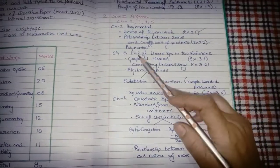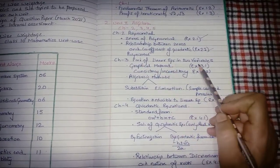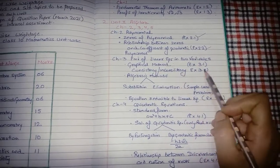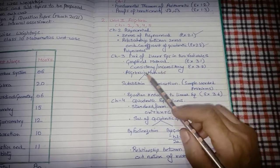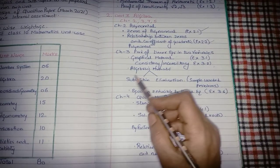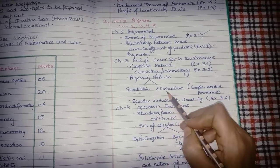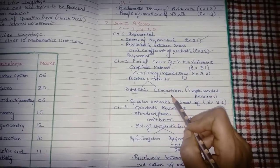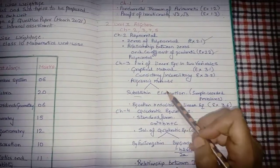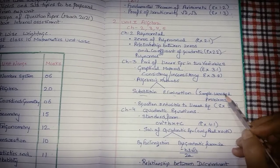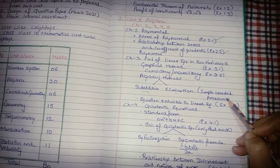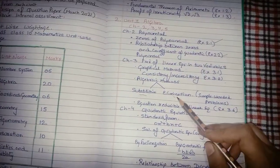For Chapter 3, Pair of Linear Equations in Two Variables: do graphical method (exercise 3.1), consistency and inconsistency (exercise 3.2). For algebraic methods, prepare only substitution and elimination methods. Cross multiplication method has been cut from the syllabus - do not prepare it. For worded problems, only simple problems from NCERT are required; hard problems will not come this year.